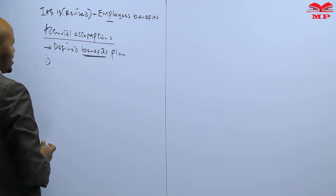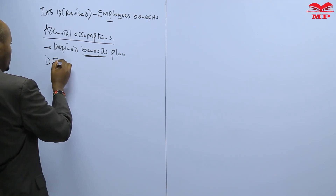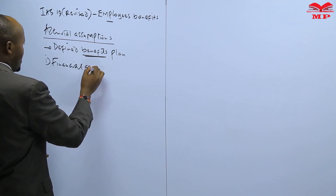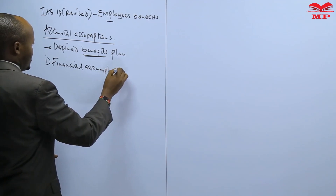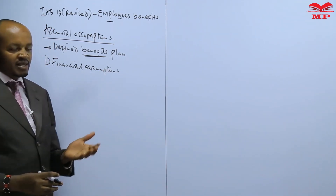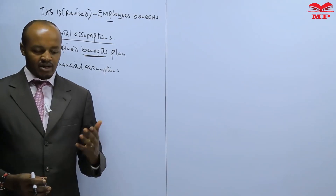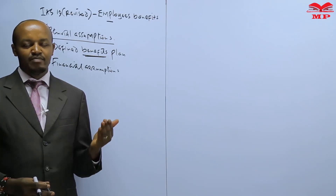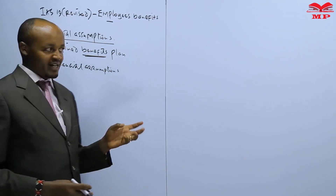These assumptions are usually classified into two categories. First, we have what are referred to as financial assumptions. These include assumptions concerning the expected salary increment, the discount rate, and the expected market interest rate, and so on.